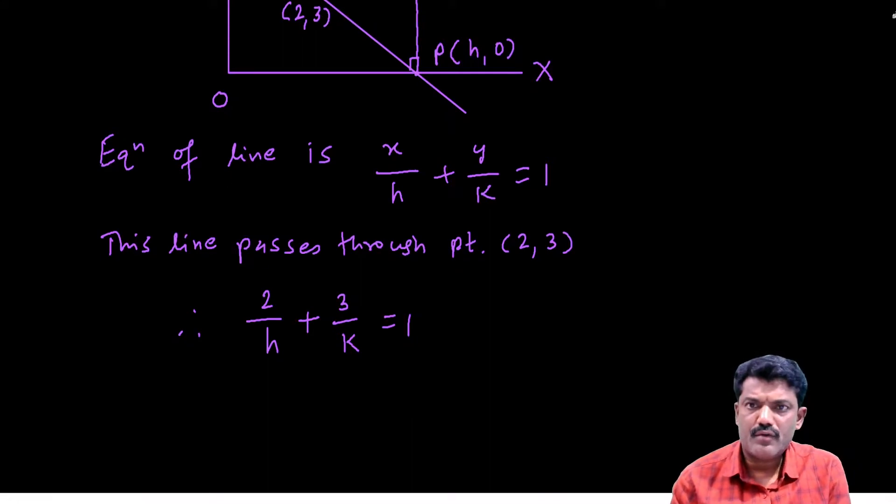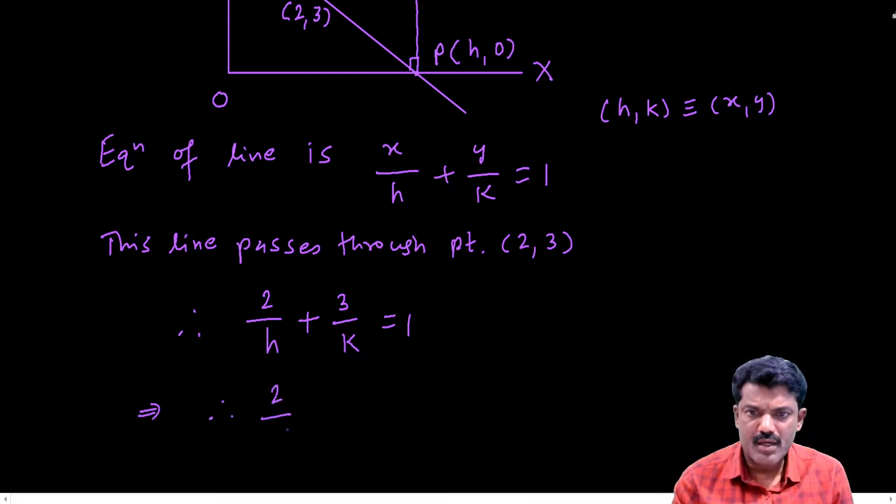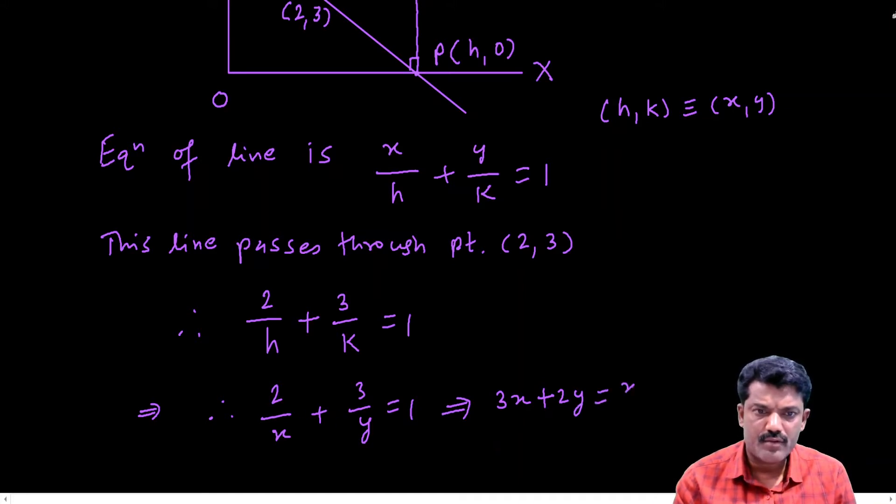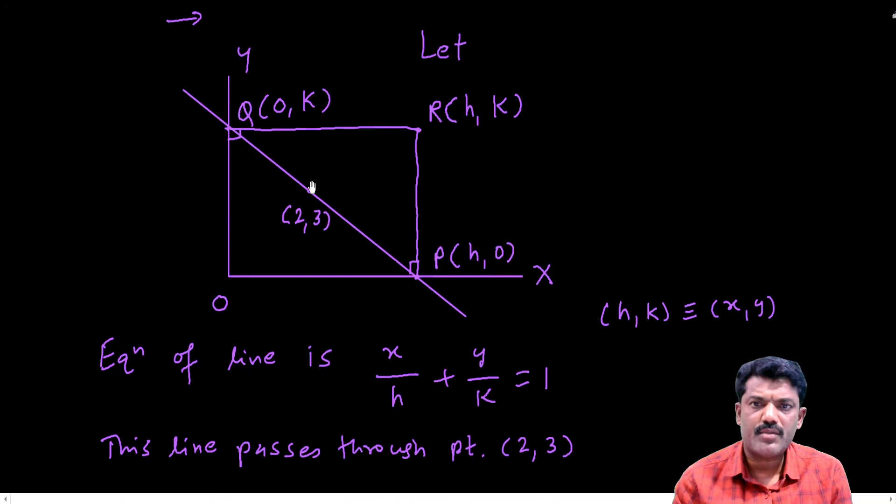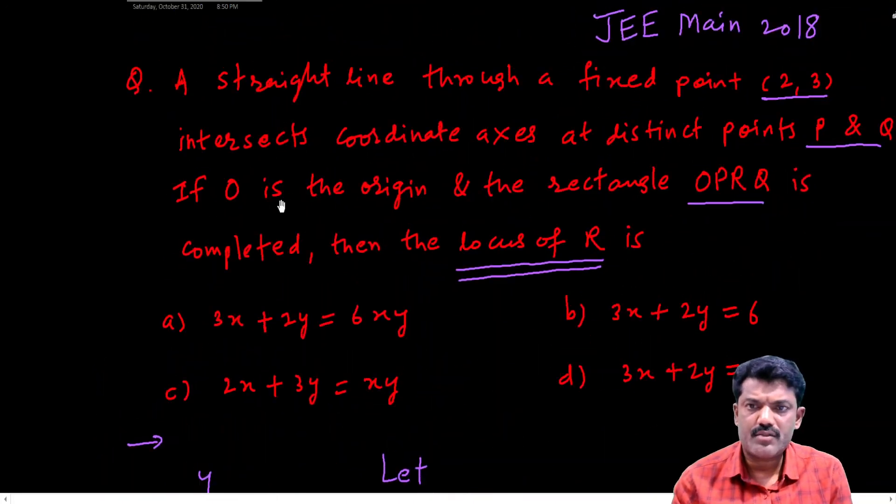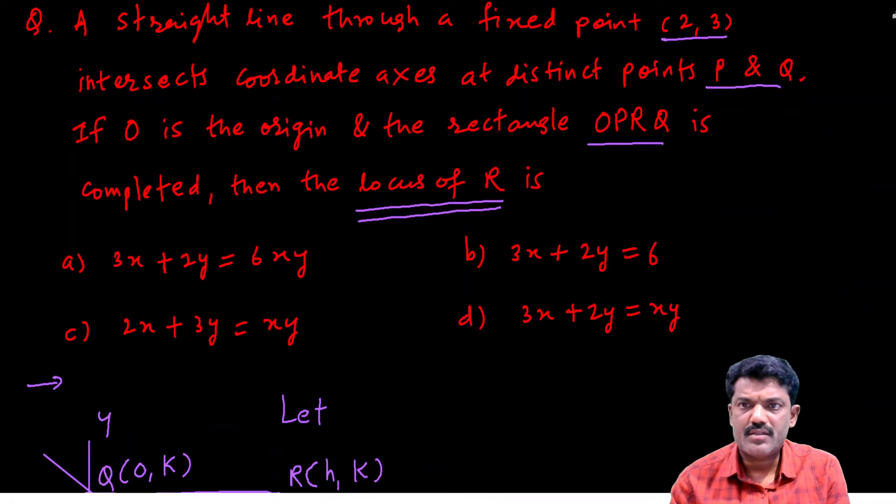And this is the equation of locus, but in the equation of locus h is replaced by x and k by y. So 2 by x plus 3 by y equal to 1, which becomes 3x plus 2y equal to xy. So this is the equation of locus of point R. 3x plus 2y equal to xy, so the last option is correct.